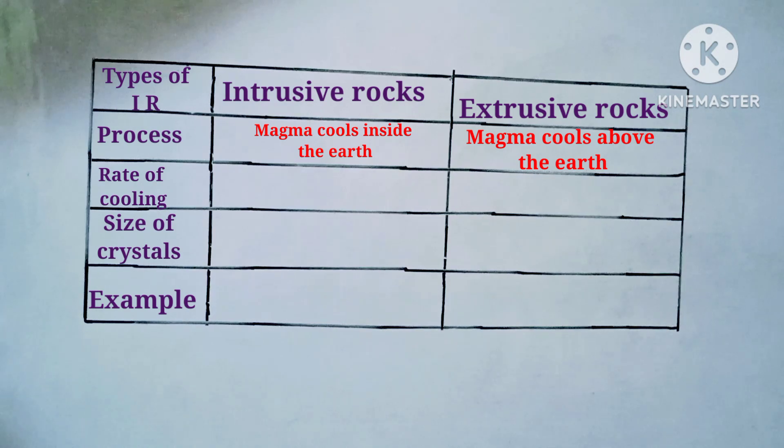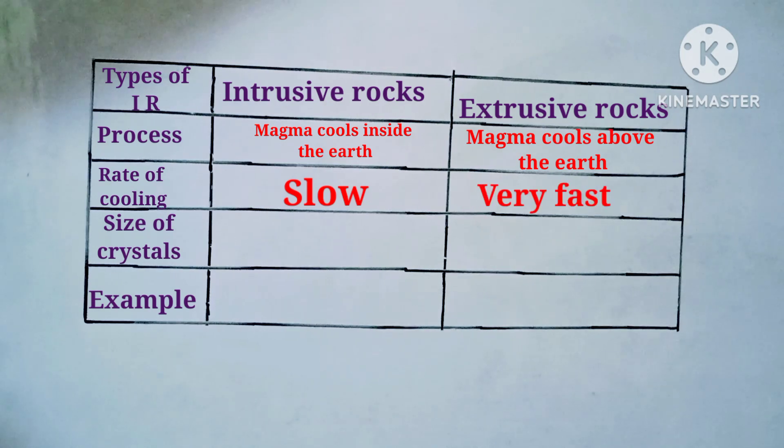Let us see the rate of cooling. In intrusive rock it is slow, while in extrusive rock it is very fast.